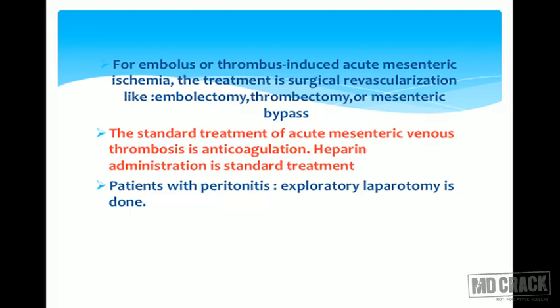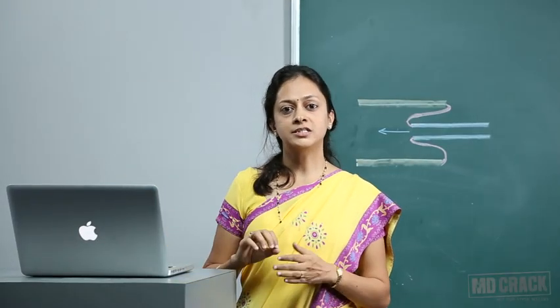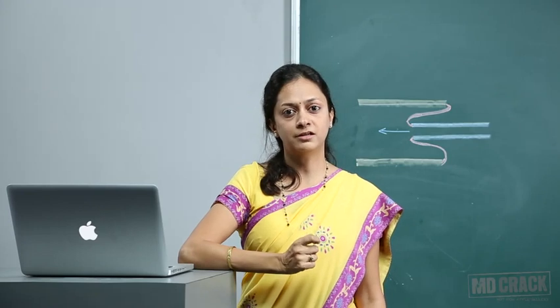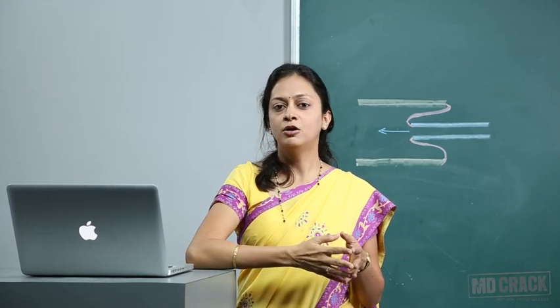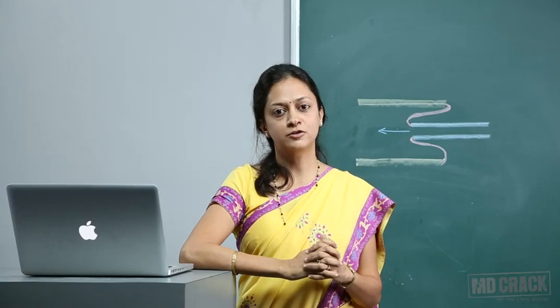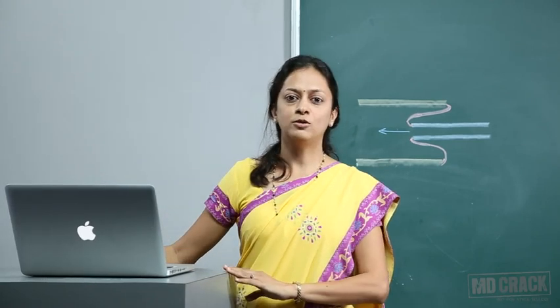For embolus or thrombus-induced acute mesenteric ischemia, treatment is surgical revascularization such as embolectomy, thrombectomy, or mesenteric bypass. The standard treatment of acute mesenteric venous thrombosis is anticoagulation — heparin administration is the standard treatment. In patients with peritonitis, exploratory laparotomy is done. If arterial, perform embolectomy or thrombectomy with bypass; if venous, heparin is the drug of choice.